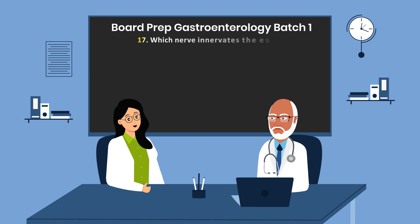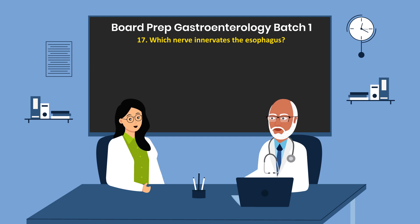Question 17. Which nerve innervates the esophagus? The vagus nerve.